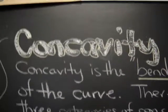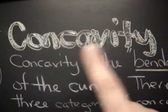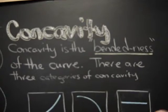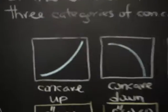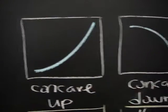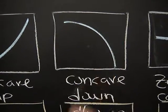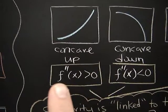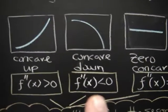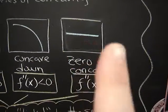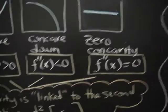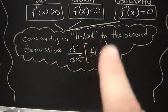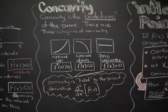Let's talk about concavity. If you're going into dentistry, this word does not mean what you think it means. Concavity is the bendedness of the curve, and there are three categories. The first category is called concave up — it bends this way. The second category is concave down — it bends this way. The last category is no concavity at all. The consequences: if you have concave up, then the second derivative will be positive. If you have concave down, then the second derivative will be negative. And if you have no concavity, then the second derivative will be zero. Concavity is linked to the second derivative, d²/dx², of the function.